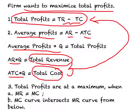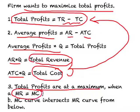Another concept we developed is the marginal concept. Marginal looks at how much revenue is generated by one additional unit of output and how much it costs to produce it. One of the rules we derived is that total profits are at a maximum when, number one, MR equals MC, and number two, the MC curve intersects MR from below. If these two conditions are satisfied, total profits will be at a maximum.